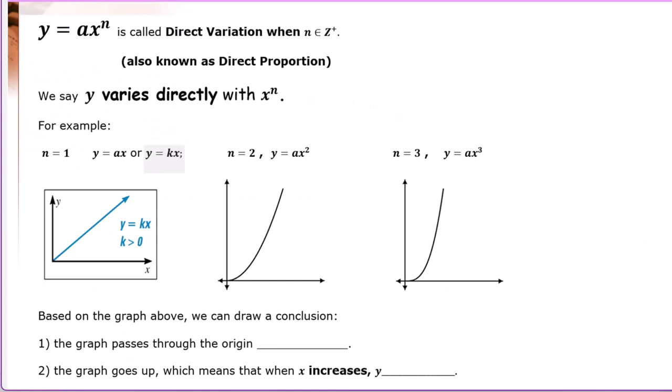Let's talk about direct variation. y equals a times x to the nth power, where n is positive integers. We call it a direct variation, also known as a direct proportion. We see y varies directly with x to the nth power.